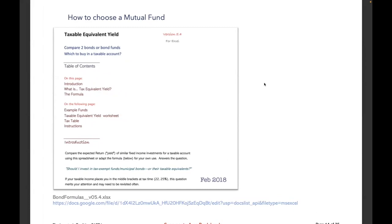If you're in a situation where you need to buy some bonds in taxable accounts, this spreadsheet gives you the taxable equivalent yield and answers the question: should I invest in tax-exempt funds or municipal bonds, or their taxable equivalents? So that's really the question — tax exempt versus taxable in a taxable account.